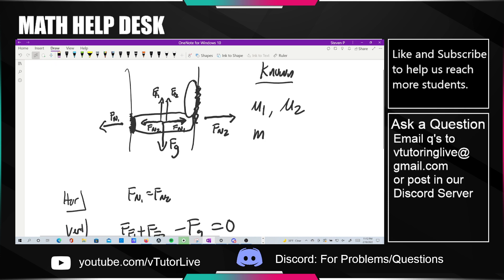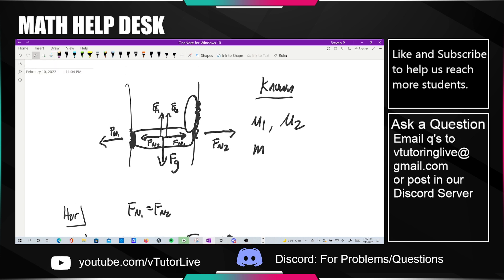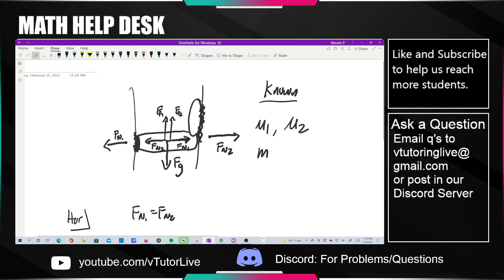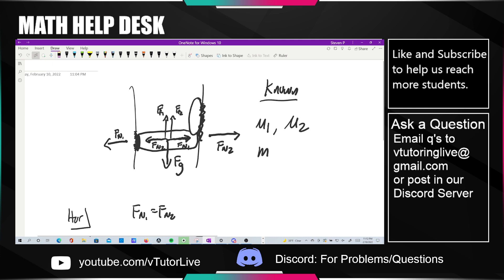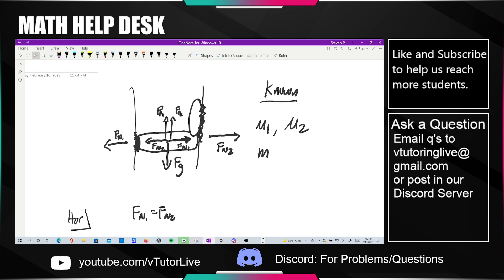At this point we have pretty much all we need to solve. It's just the setup of this problem is kind of tricky, but solving shouldn't be too bad. So what do we know? We know that in the horizontal direction, the person is static.